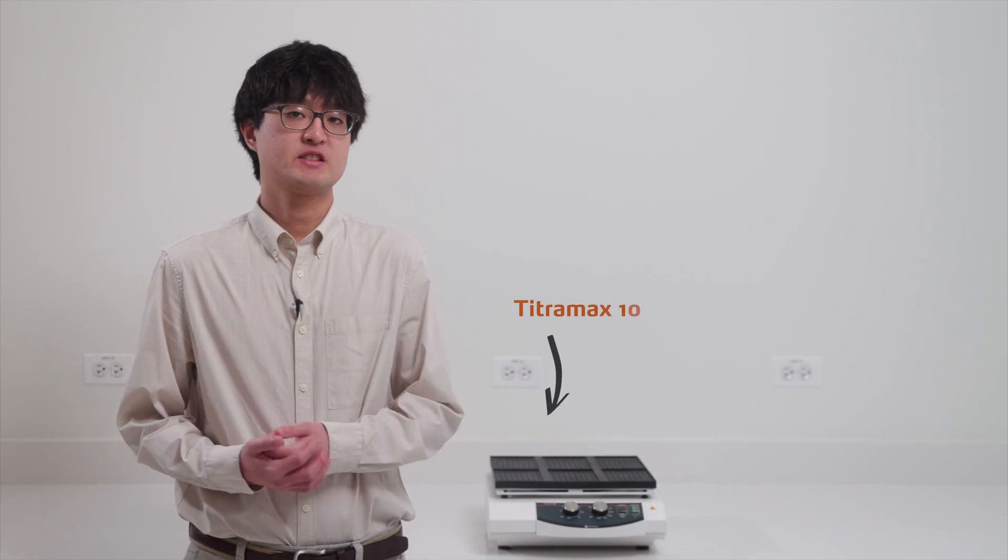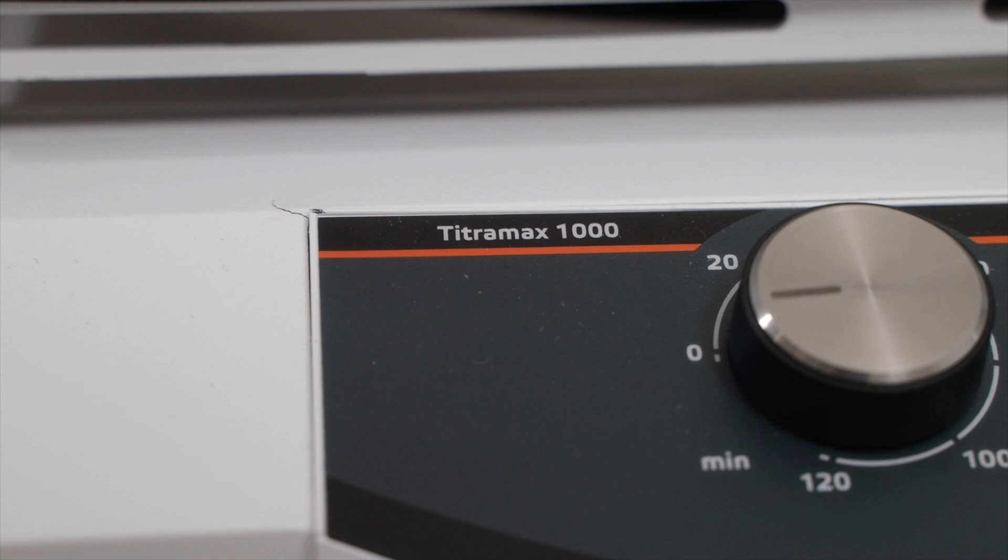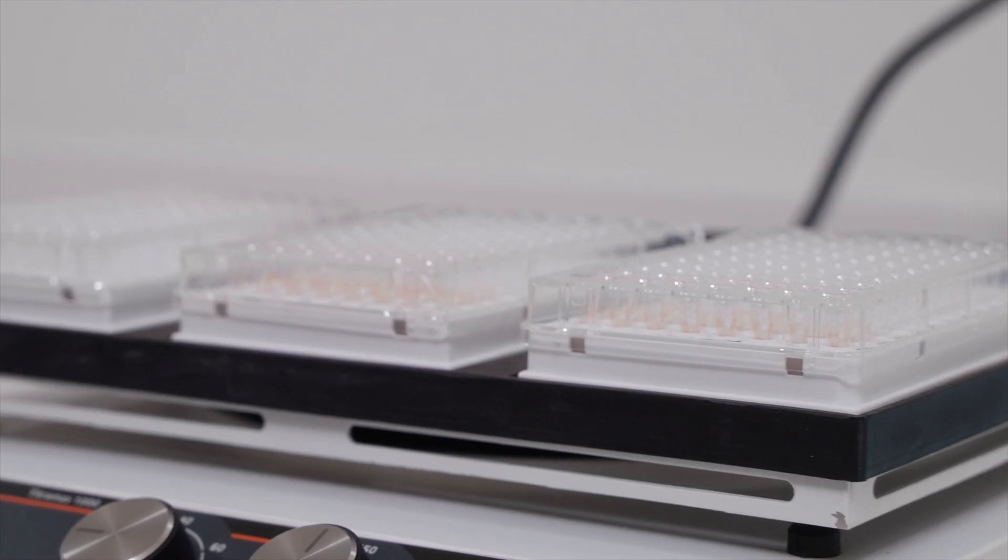The final model in the Titramax series is the Titramax 1000. The Titramax 1000 is our largest model as it can hold up to six micro-titer plates. It has a vibration orbit of 1.5mm and shakes at speeds up to 1350rpm.